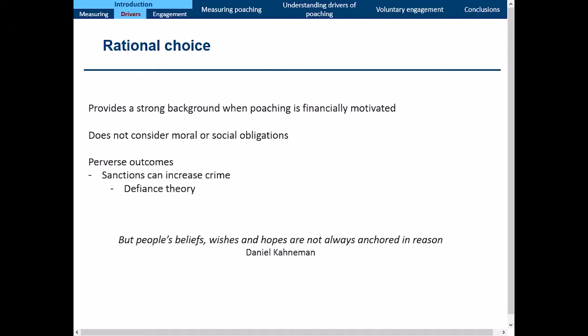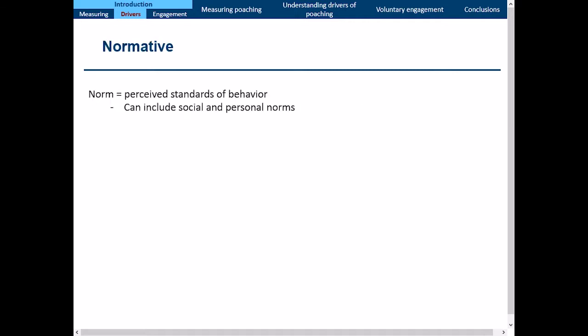As Daniel Kahneman, a very prominent cognitive psychologist, notes, people's beliefs, wishes, and hopes are not always anchored in reason. People are normative animals — we're shaped and affected by the way things happen around us. In the second approach, you have norms: perceived standards of behavior. These can be social norms, personal norms, and differences in opinions on those norms.